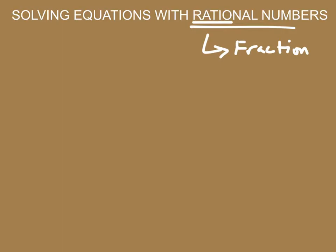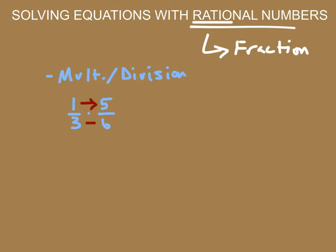So I want to talk about some operations with fractions. The first one is multiplication and division of fractions. If I were to take one-third and multiply it by five-sixths, we simply just multiply across. So my new fraction would be one times five over three times six. One times five gives us five, and three times six is eighteen. That's how we multiply fractions.